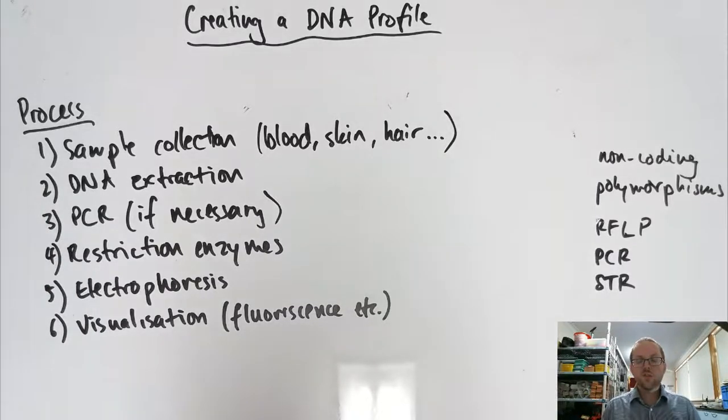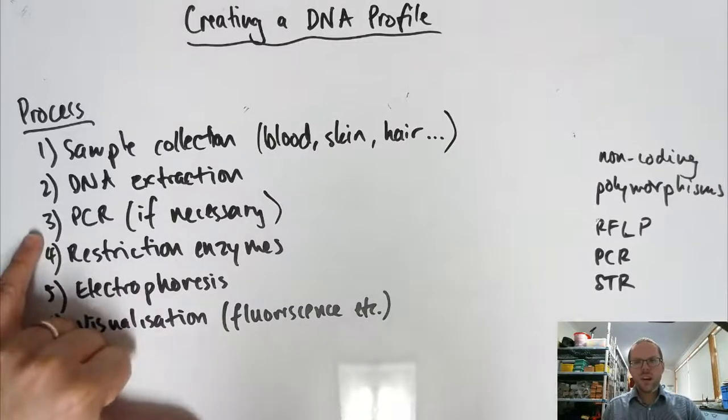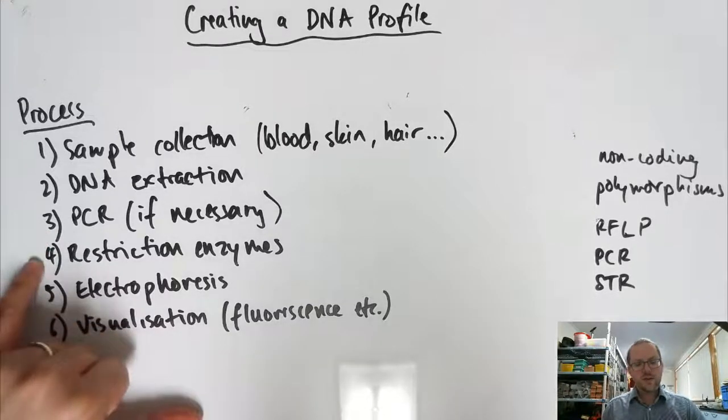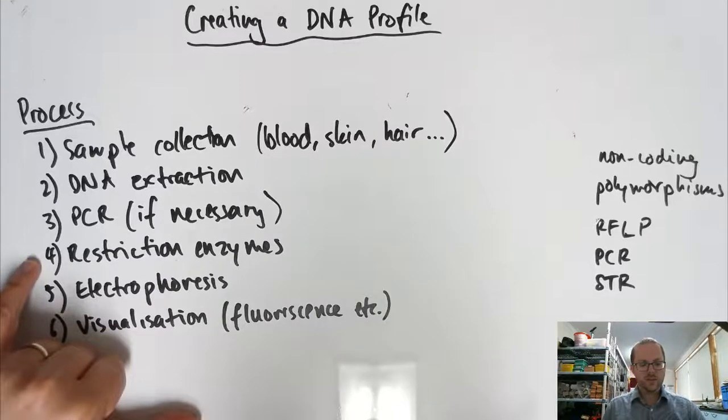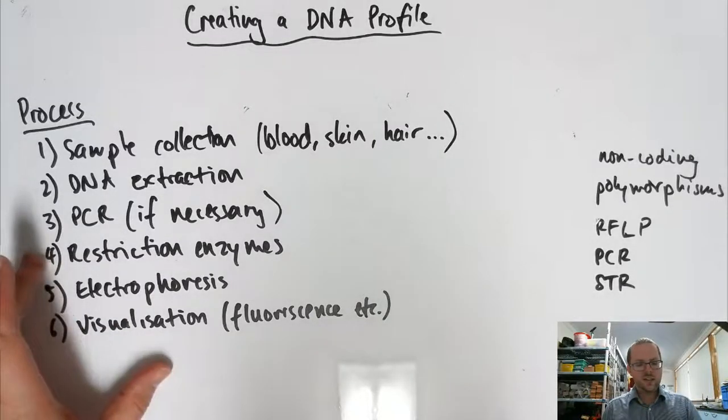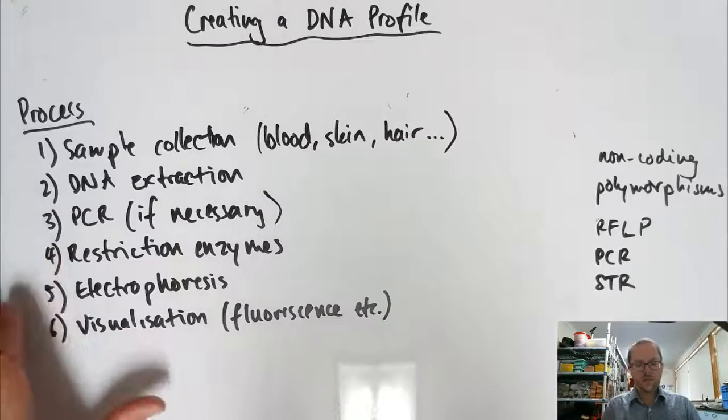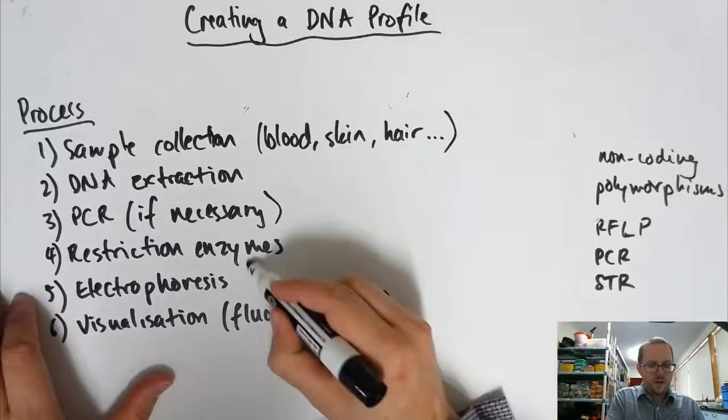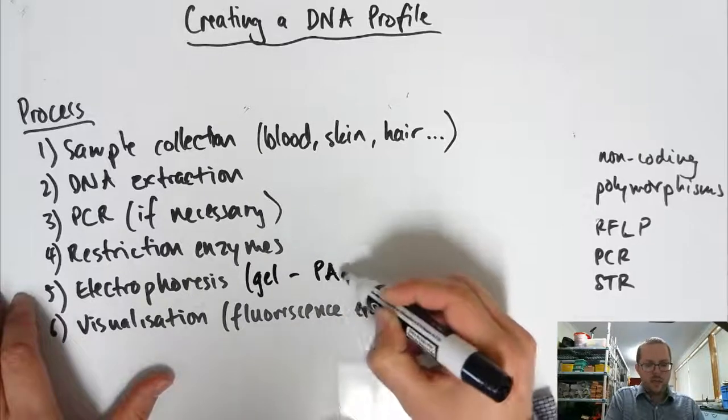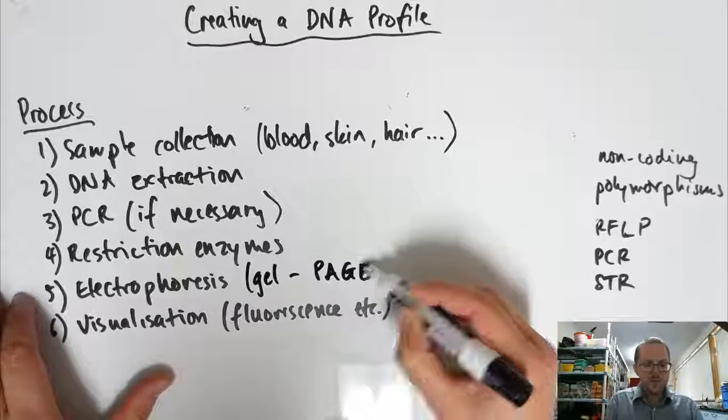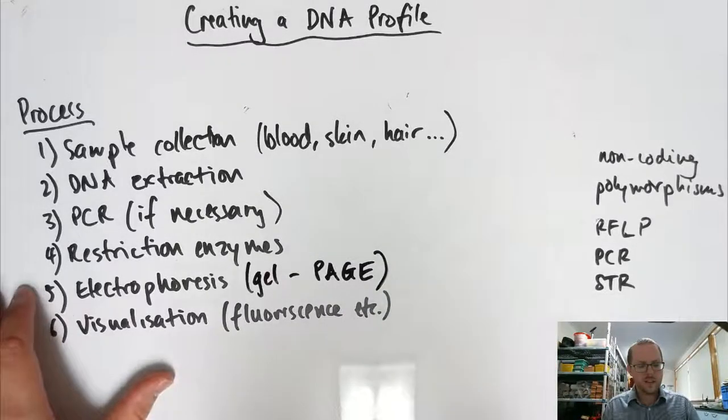So that involves centrifuging. We will actually break down the cellular structure so that we can extract the DNA, and then we'll centrifuge to leave the rest of the components behind. If the sample is small enough that PCR is required, that's the point at which we will do it. We'll then use restriction enzymes to cut away any unnecessary sections, to restrict to the sizes that we need, cut it into the sections to analyze using electrophoresis. So we're using a gel - it's called Polyacrylamide Gel Electrophoresis, that's the technique.